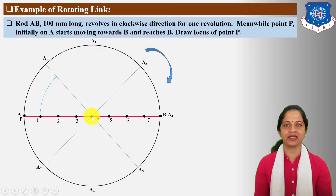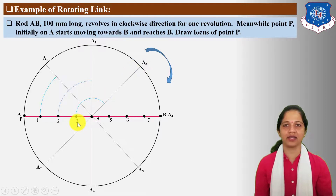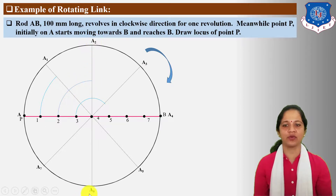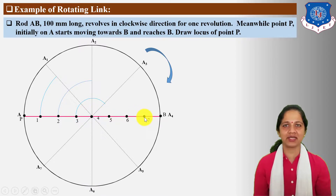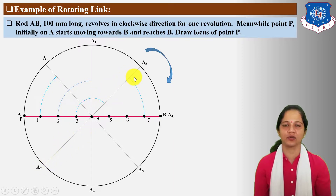Take radius 4-3 and cut arc on A3 road. Note that this arc is common for A3 and A5 road, and the arc for radius 4-2 is common for A2 and A6 road. Next, find out the A7 position on A7 road. Take centre 4, radius 4-7, and cut arc on A7 road.